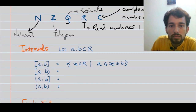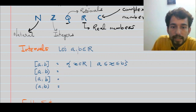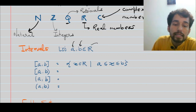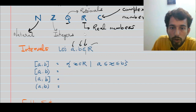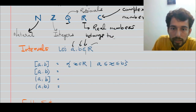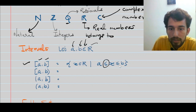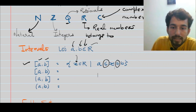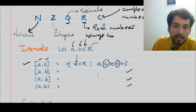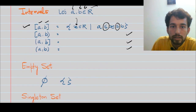Now let's discuss some particular types of sets. I choose two numbers a and b belonging to the set of real numbers. The first particular set is the closed interval, which consists of all points that lie between a and b, including both endpoints. The collection of all x in the reals satisfying this property — I leave the remaining three interval types for you to fill in using set-theoretic notation.